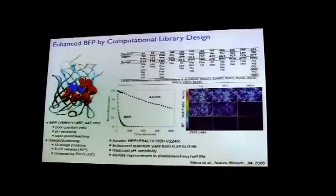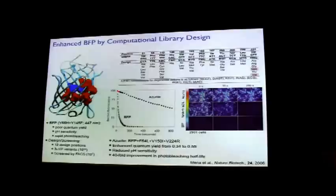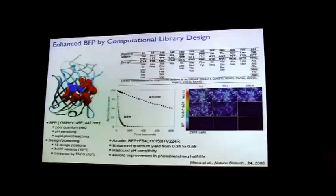The design targets degenerate codons across the cluster of positions in the protein — some positions remain wild-type, some have multiple mutations. In a single pass of FACS analysis, we screened the library and pulled out a clone — a triple mutant from wild-type called azurite. It enhances the quantum yield from 0.34 to 0.55 — quite remarkable — and gives a 40-fold improvement in photo-bleaching half-life. In real mammalian cells, BFP is very dim due to the poor quantum yield and gets dimmer over time due to photo-bleaching, whereas our azurite variant is very bright at time zero and maintains brightness even at longer time scales.